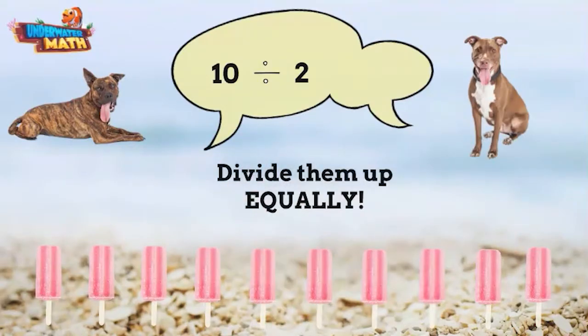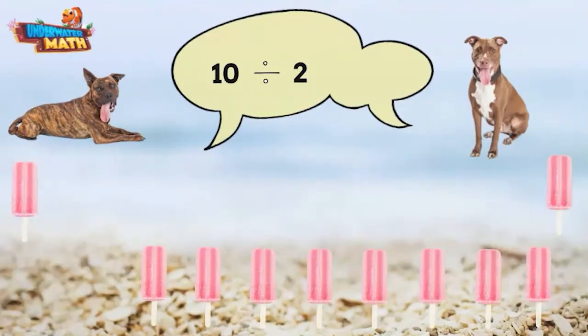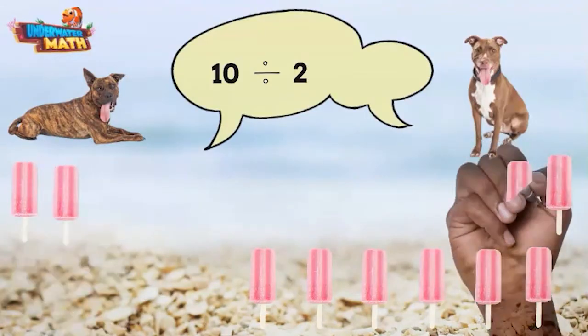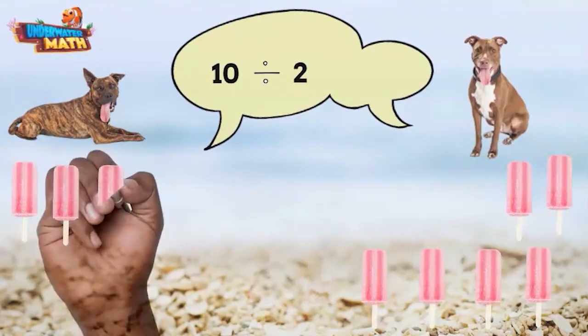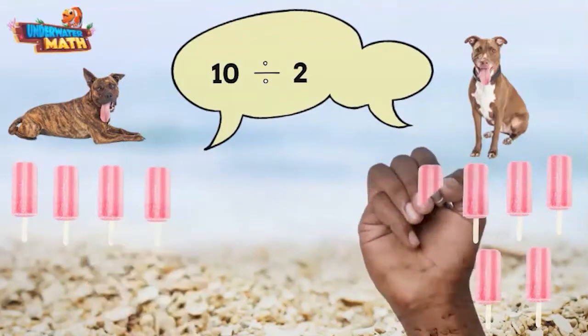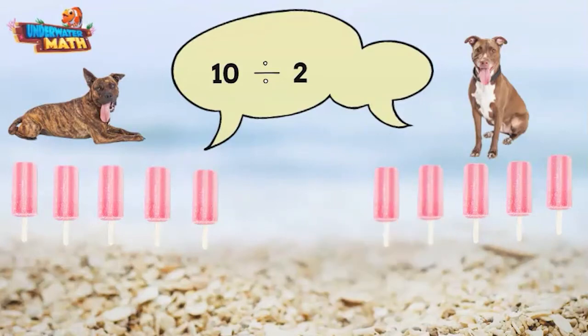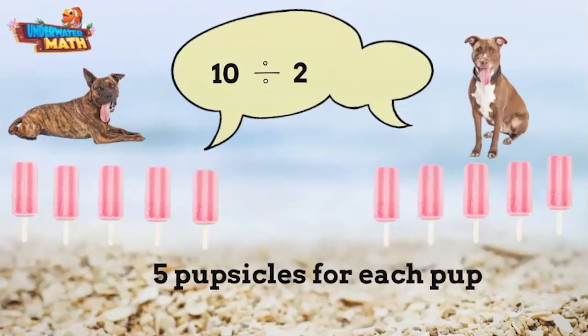To solve this problem, we can divide up the popsicles equally, giving one popsicle to each pup, then another, and then another, until all the popsicles are handed out. Each pup has 5 popsicles, so we know 10 divided by 2 equals 5.